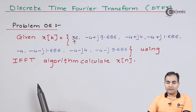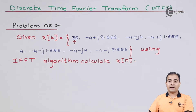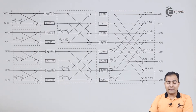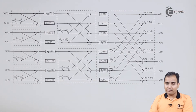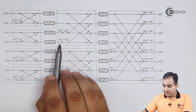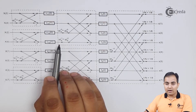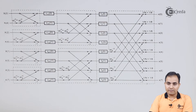We will solve this IFFT algorithm structure using DIT-FFT. Let's see the butterfly diagram first. You can see the difference between DIT-FFT and IFFT algorithm. Basically from the formula you can get the idea, but in the butterfly diagram all the twiddle factors will be counted in the clockwise direction.